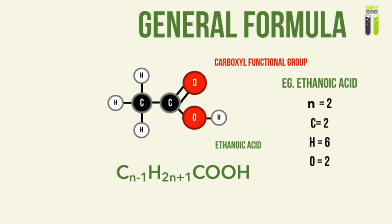Let's look at the general formula for this type of organic molecule. I've isolated the COOH functional group separately in this general formula to make it much clearer. The general formula is Cₙ₋₁H₂ₙ₊₁COOH, whereby N is the number of carbon atoms, and COOH is identified separately.